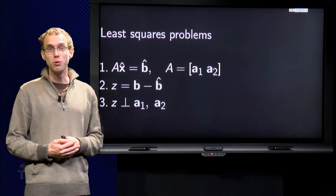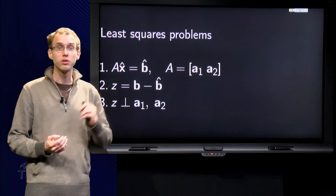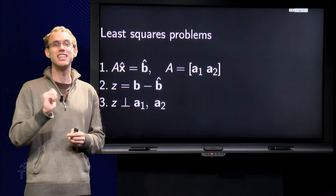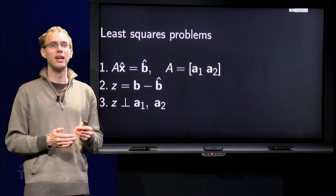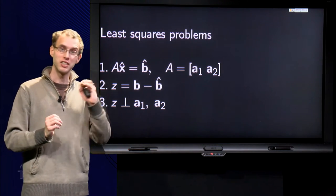Finding the least squares solution of Ax = B is not so hard if the columns of A are already nicely orthogonal to each other. In that case we can compute B hat directly and x hat in the next step.